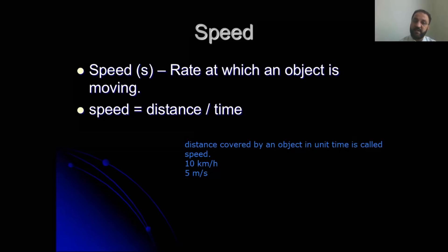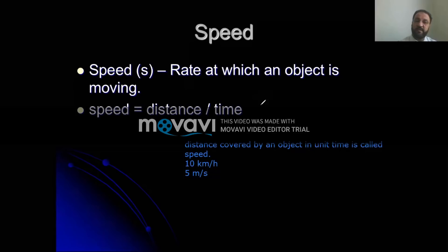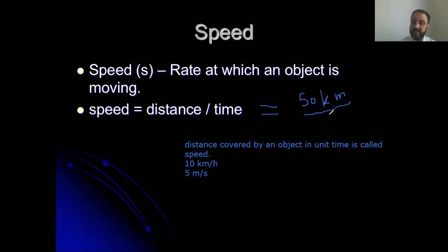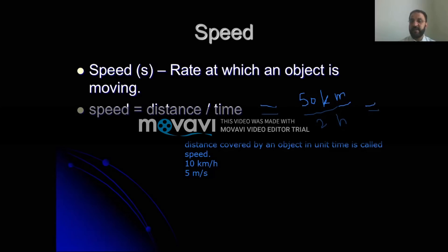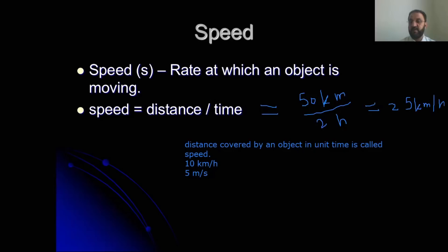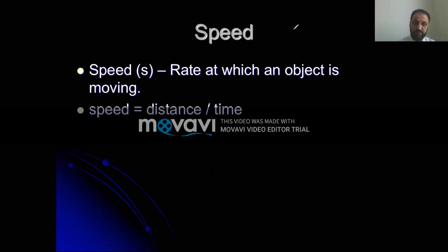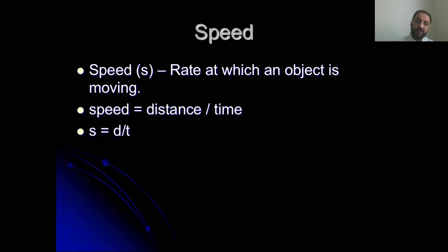For example, the distance between two places is suppose 50 kilometers, and you covered this distance in two hours. So you divide 50 by 2, and it becomes 25 kilometers per hour. So in one hour your speed was 25 kilometers. This is speed: 25 kilometers per hour. The formula is speed equals distance divided by time. You can represent speed as S, distance as D, and time as T.